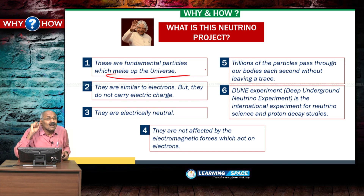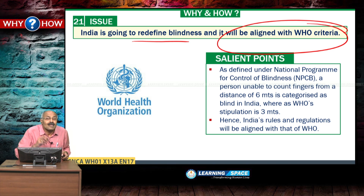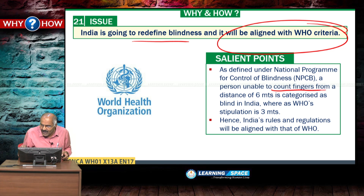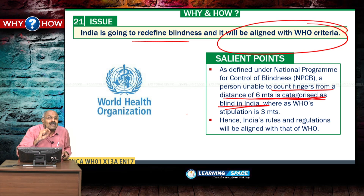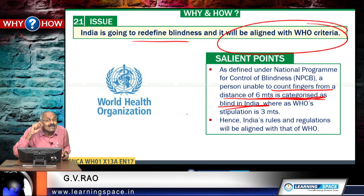The LIGO project is expected to come up in Maharashtra — a place was selected there. India is also going to redefine blindness and align it with WHO criteria. So far in India, a person unable to count fingers from a distance of 6 meters is categorized as blind, whereas the World Health Organization stipulation is 3 meters. Now India's rules and regulations will be aligned with that of the World Health Organization.